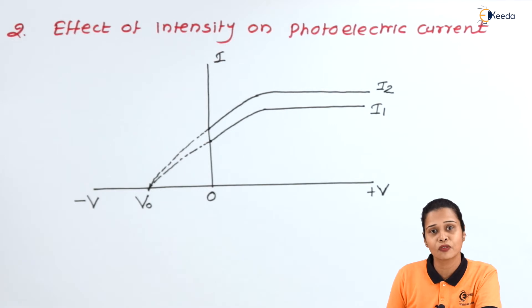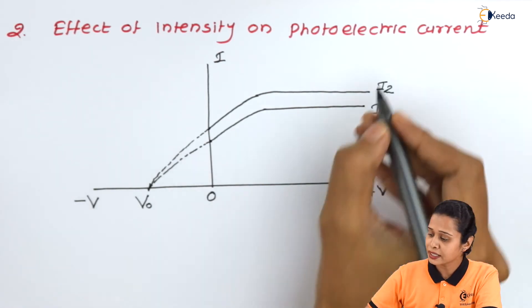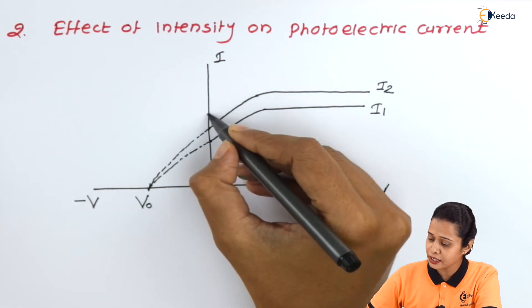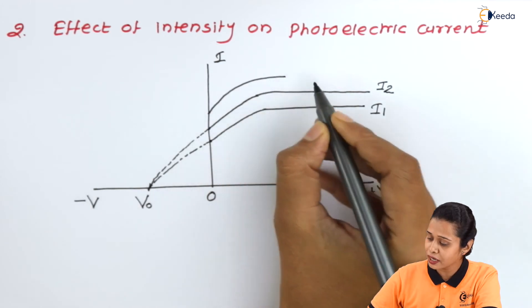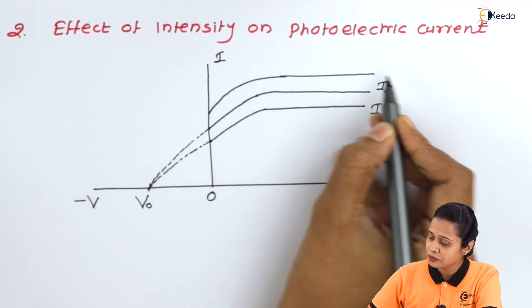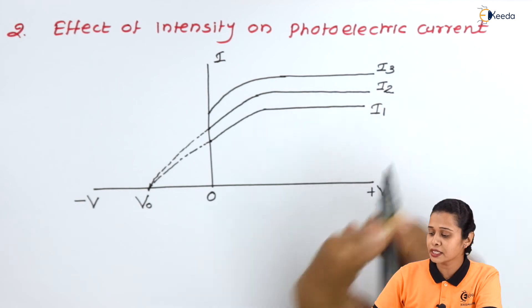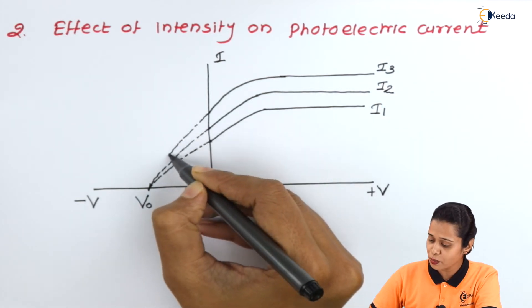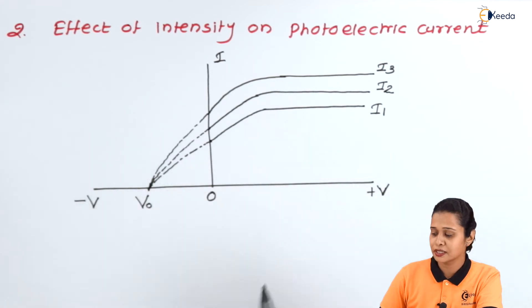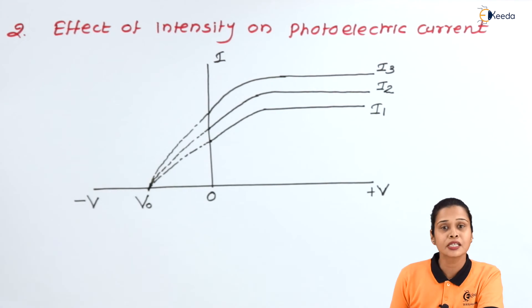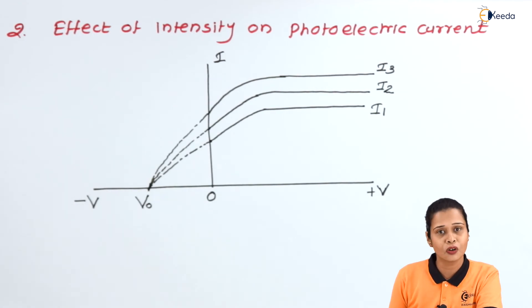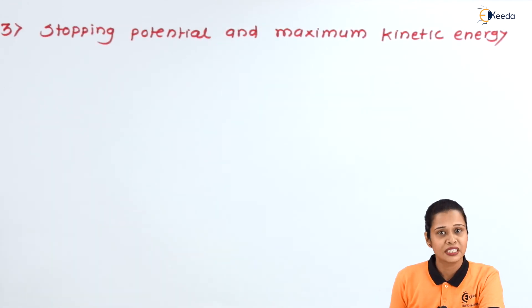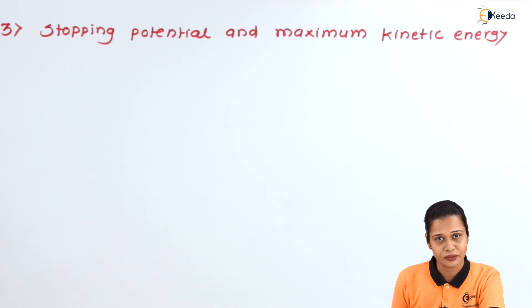For a third intensity greater than I1 and I2, there is again an increase in the value of current, but still the stopping potential value remains the same. In this way, photoelectric current changes according to the intensity of incident light. Now we will see the third characteristic: stopping potential and kinetic energy.